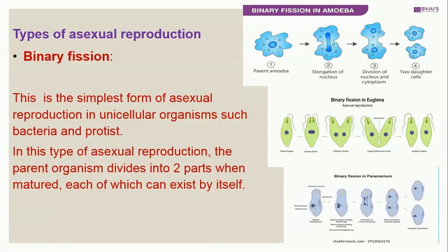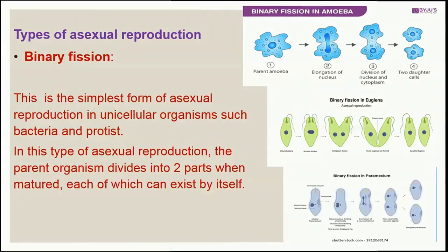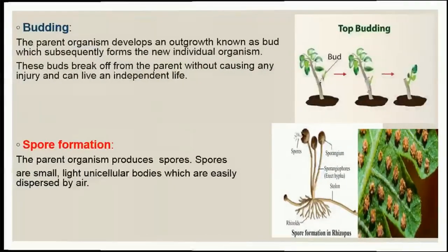Here we have images of binary fission in amoeba, binary fission in euglena, and binary fission in paramecium. You can see the matured parent cell dividing; at the end, two daughter cells are formed. This also takes place in euglena and paramecium. The new daughter cells can exist entirely on their own.